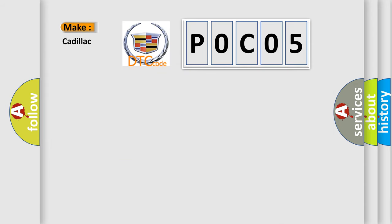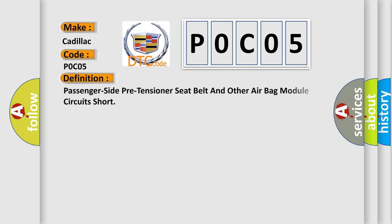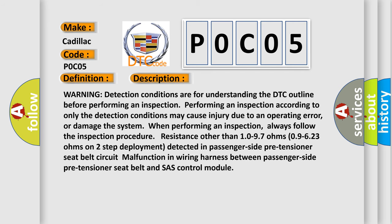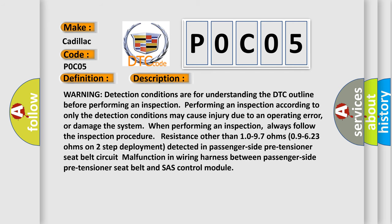The number itself does not make sense to us if we cannot assign information about what it actually expresses. So, what does the diagnostic trouble code P0C05 interpret specifically for Cadillac? The basic definition is: passenger side pre-tensioner seat belt and other airbag module circuits short. Warning detection conditions are for understanding the DTC outline before performing an inspection. Always follow the inspection procedure: resistance other than 10 to 97 ohms or 09-623 ohms on two-step deployment detected in the passenger side pre-tensioner seat belt circuit indicates a malfunction in the wiring harness between the passenger side pre-tensioner seat belt and the chassis control module.